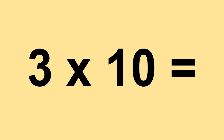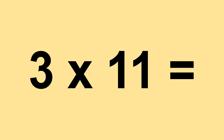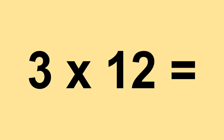Three times ten equals thirty. Three times eleven equals thirty-three. Three times twelve equals thirty-six.